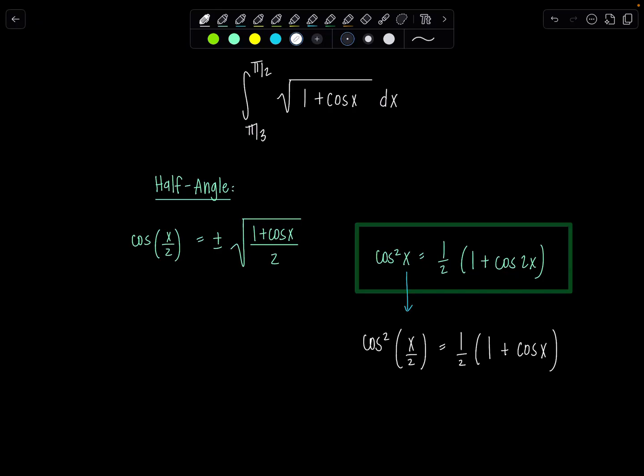Now hopefully you can see we can get from here to the identity we used back in the day by simply taking the square root of both sides. You just take the square root here, square root here, plus or minus, and there you go.